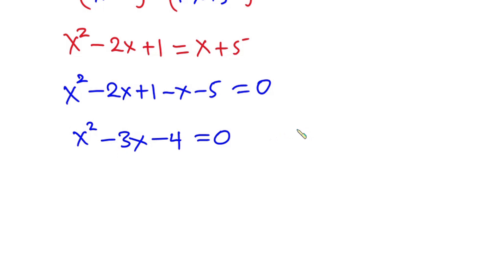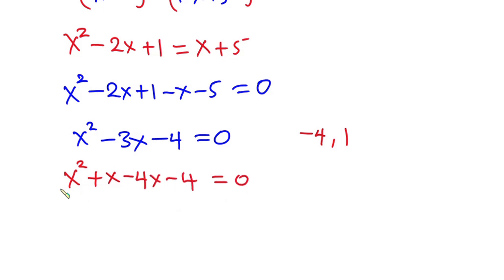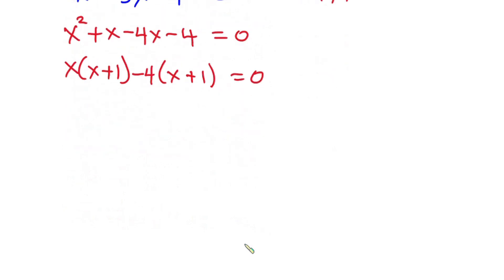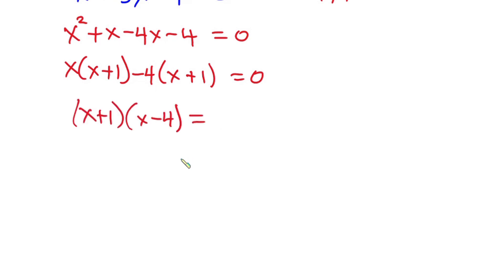The numbers are negative 4 and positive 1. So the equation becomes x squared plus x minus 4x minus 4 equals 0. Factoring: x times (x plus 1) minus 4 times (x plus 1) equals 0, giving us (x plus 1)(x minus 4) equals 0.